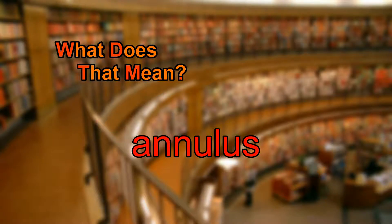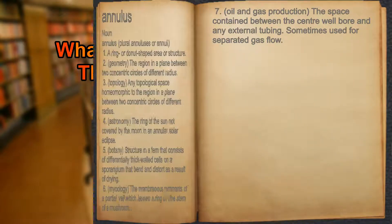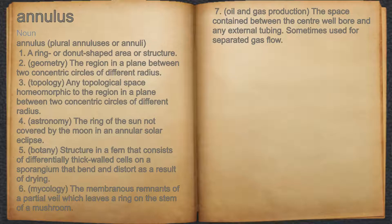What does annulus mean? Annulus. Noun. 1. A ring or donut-shaped area or structure.